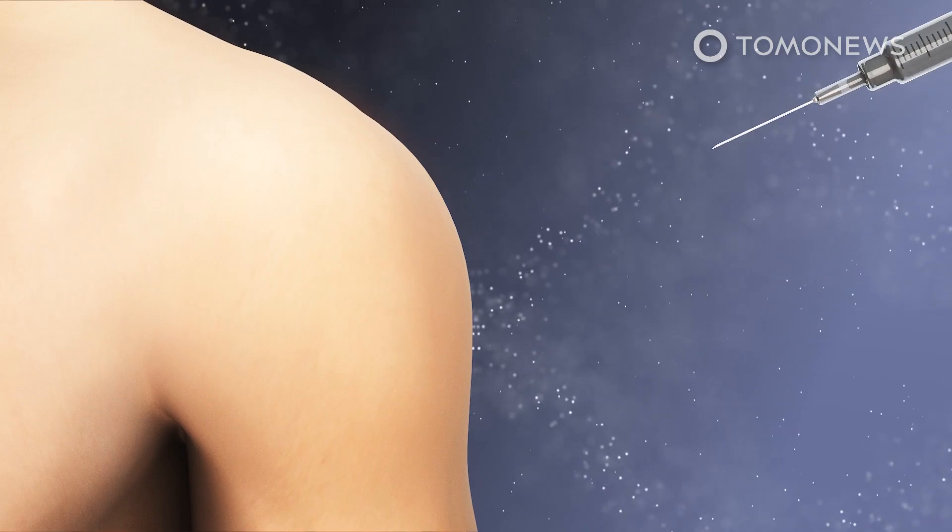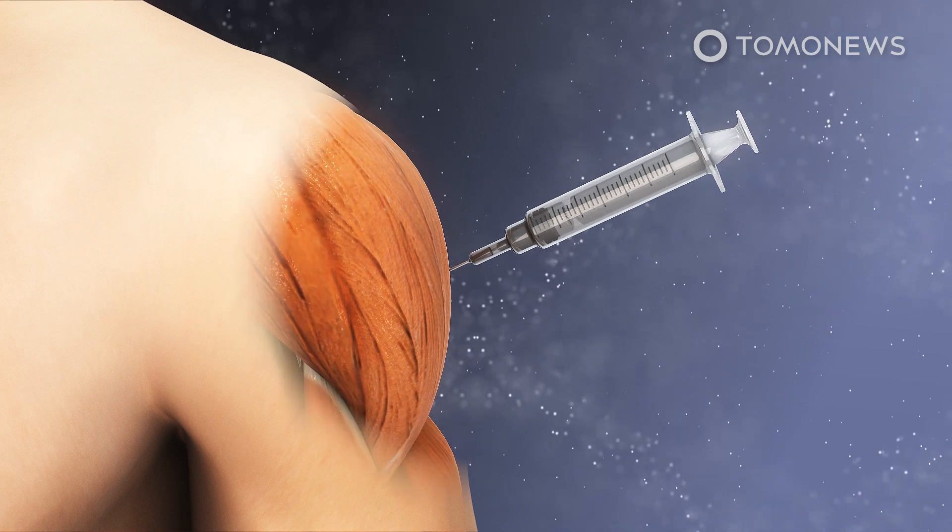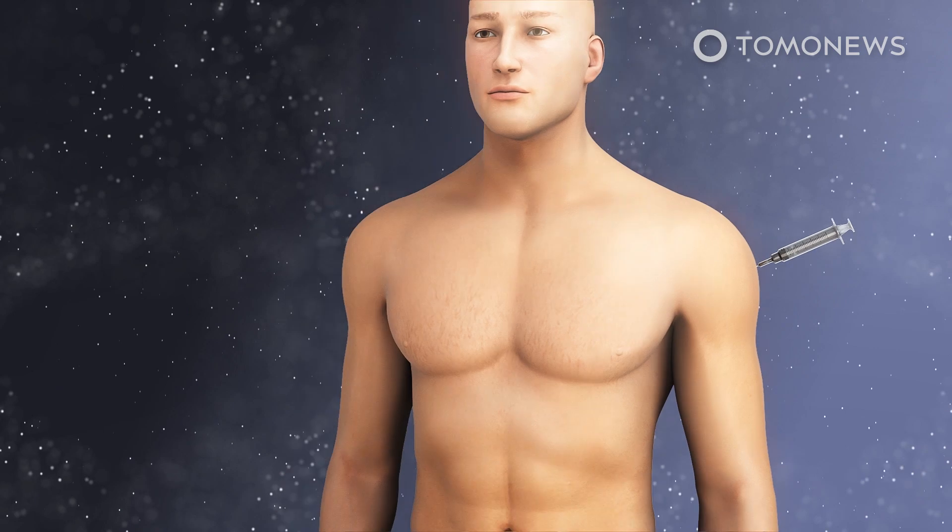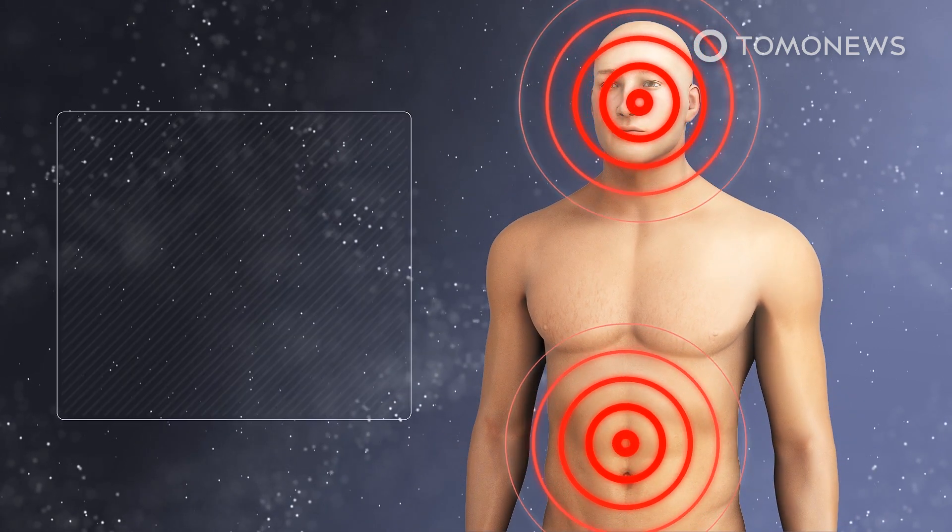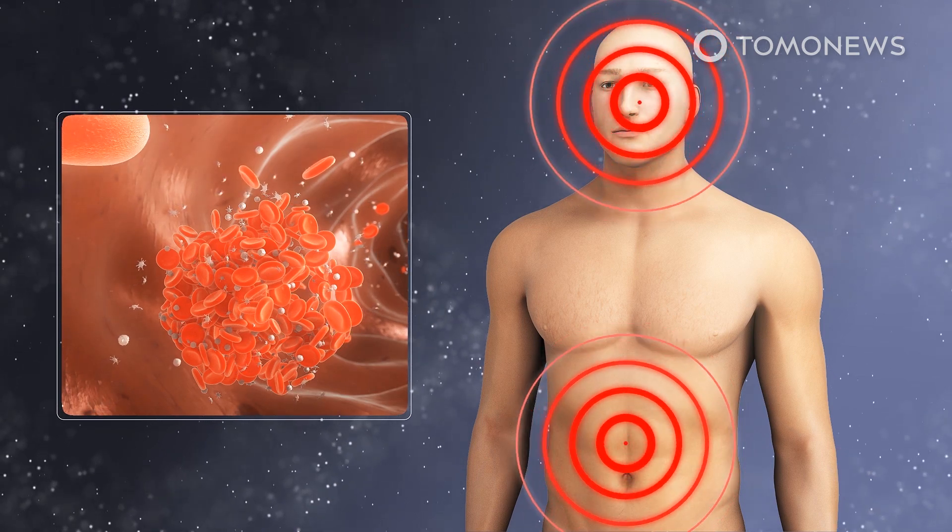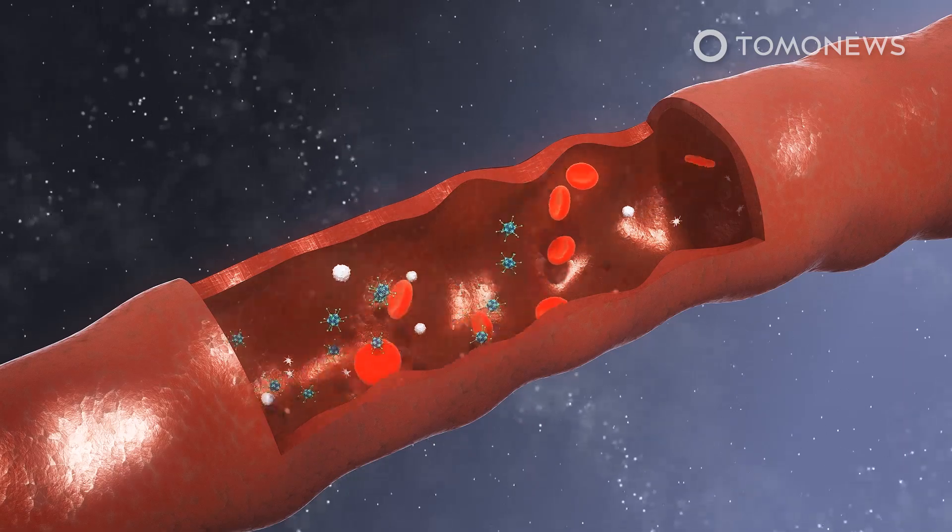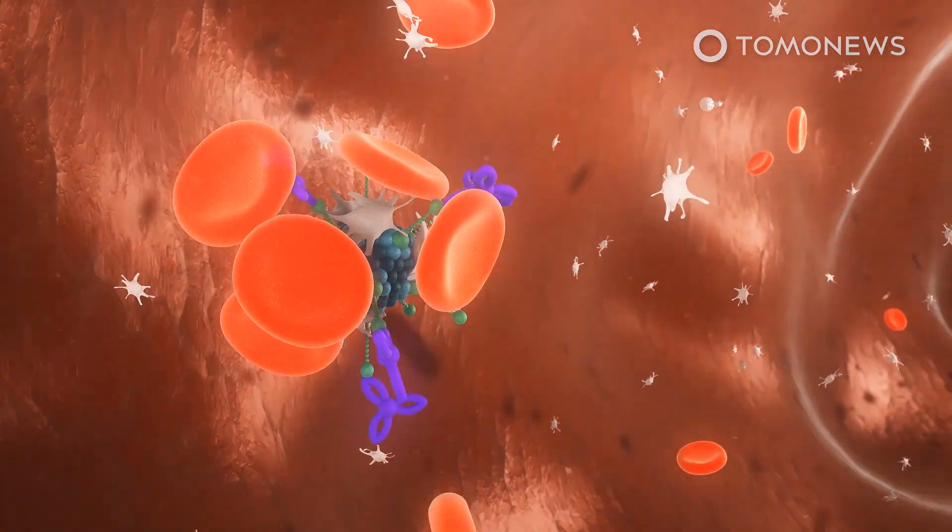Vaccine-induced clots like these have been linked to just 73 deaths out of nearly 50 million doses of AstraZeneca given in the UK, while AstraZeneca said the vaccine is thought to have saved more than a million lives around the world and prevented 50 million cases of COVID. The clots are more likely to occur because of a COVID infection than the vaccine.